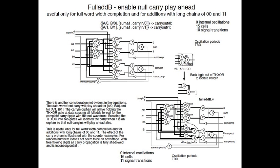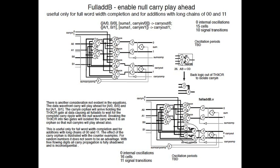Here are some more derivations. This is Full Adder B, which represents the carry play-ahead for the null. If you remember in the counter, there was a situation where the carry could come in and prevent the play-ahead, so we isolated the carry one gate back from the carry output to keep the carry from preventing the early play-ahead of the null wavefront. That's what this represents, and here are the integrated versions of it.